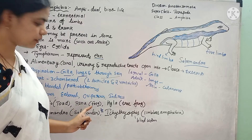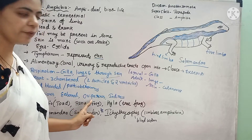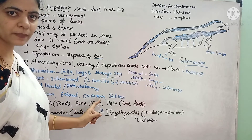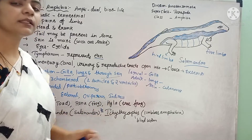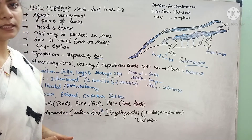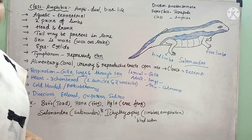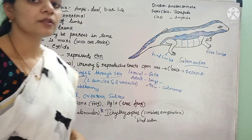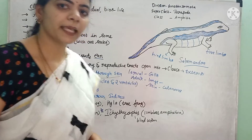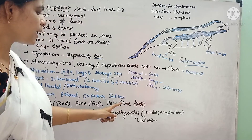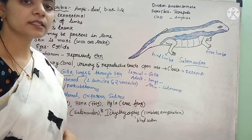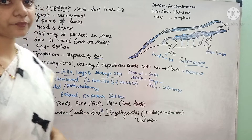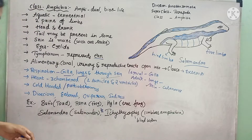After fertilization, these are oviparous, meaning they lay only eggs. The development is indirect — from the eggs the larval stages emerge, which then metamorphose into adults. Hence this is called indirect development.